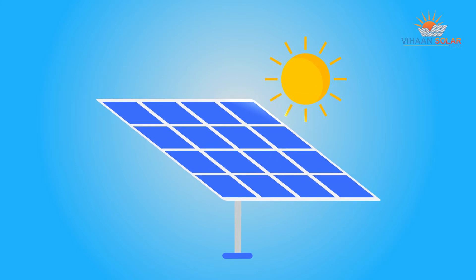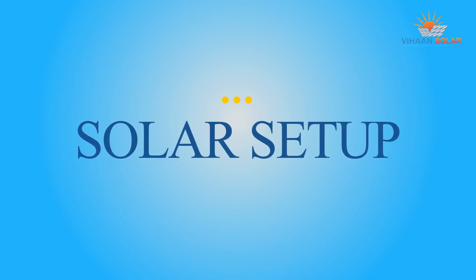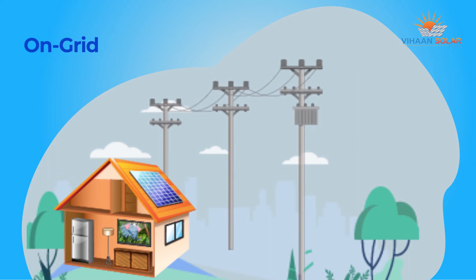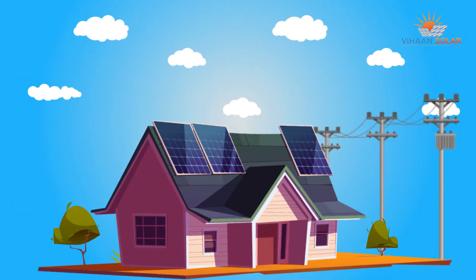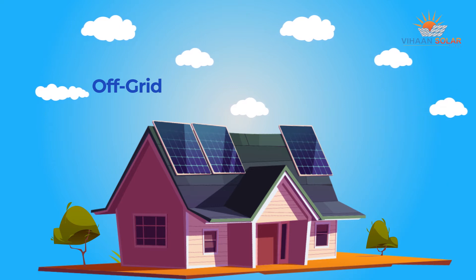Planning for a solar setup and don't know what kind to opt for? Here we will discuss the two types of solar setup: on-grid and off-grid. The basic difference is that an on-grid system works with the electricity grid, and net metering approval is given by the utility company against an electrical meter, whereas the off-grid system works independently of the grid and can be set up where there is no grid connectivity.